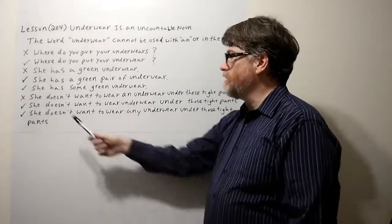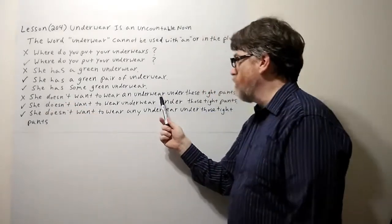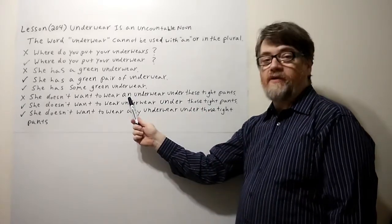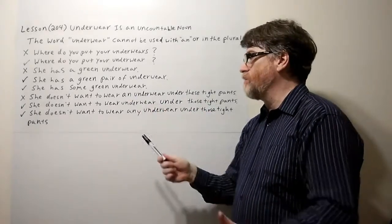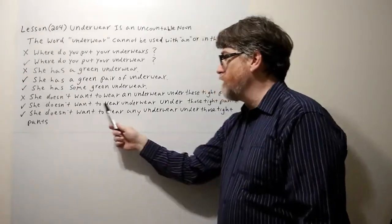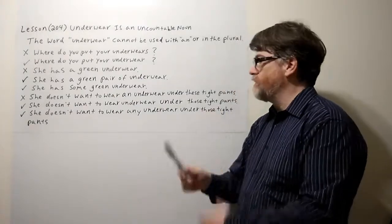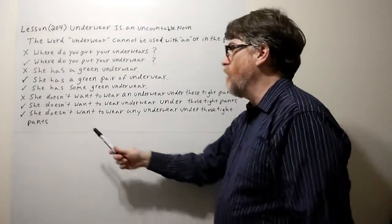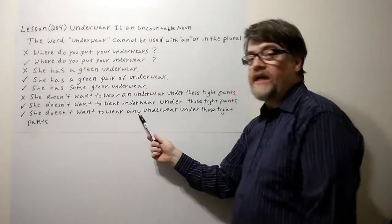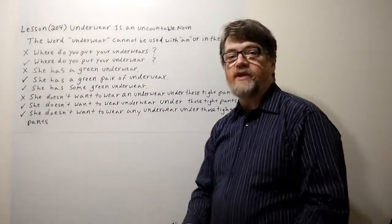Let's look at the next example with the X: She doesn't want to wear an underwear under these tight pants. Again, you should never use an underwear. That's always wrong. With the check, you could say she doesn't want to wear underwear under those tight pants, or you could say she doesn't want to wear any underwear under those tight pants for emphasis.